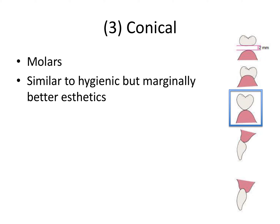The next design is the conical pontic, reserved mostly for molars. It's similar to the hygienic design but with marginally better aesthetics. The conical shape has just one little point of contact at the ridge instead of an open space. This enables you to slide a brush under there — there's some give of the soft tissue — so you can put a brush or super floss underneath the bridge and keep it clean.